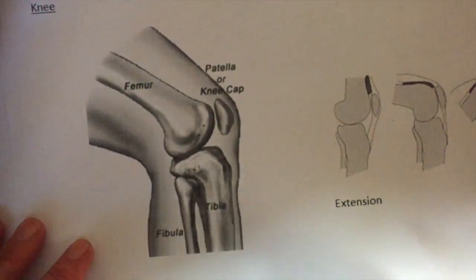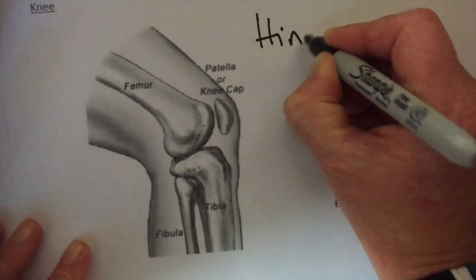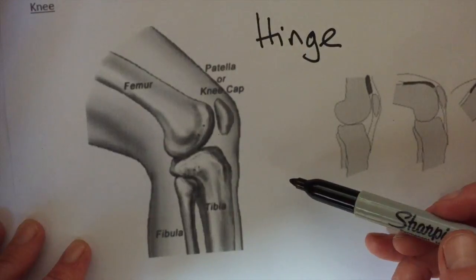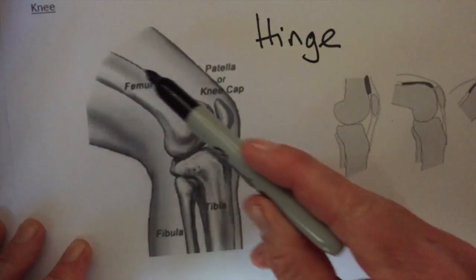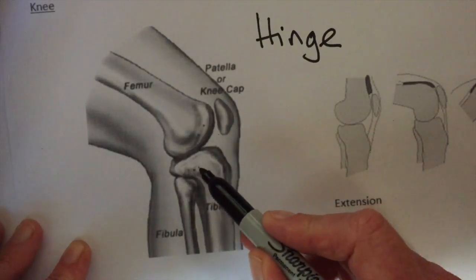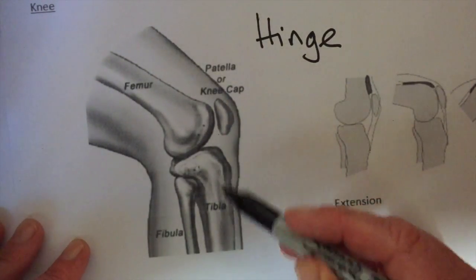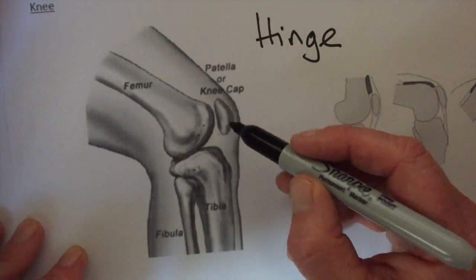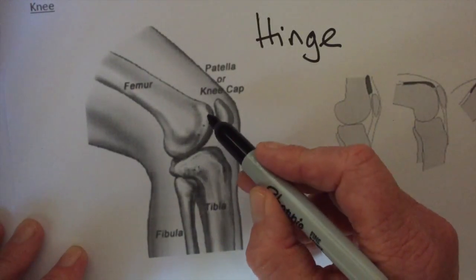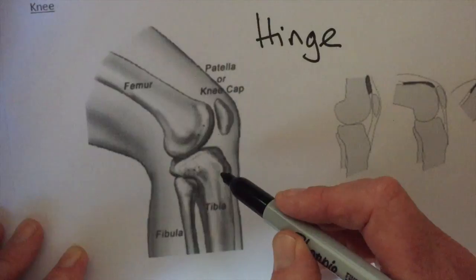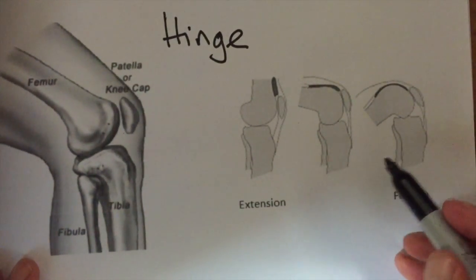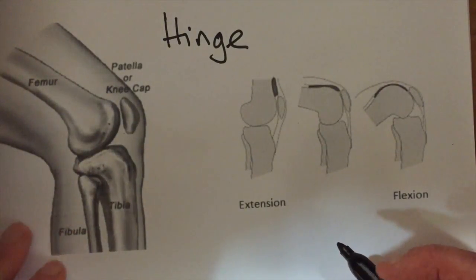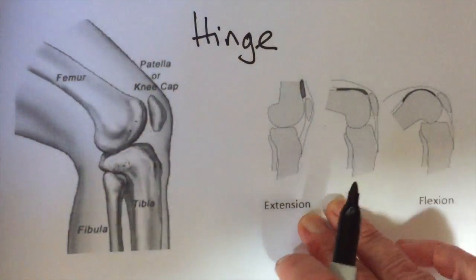The other type of joint you want to know about is called the hinge joint, and this example is the knee. You've got the biggest bone in the body, the femur, basically moving on top of the tibia. The fibula adds stability, and the knee cap moves within a groove. Effectively it's the femur and tibia that are moving. The movements it allows are basically back and forth, so that's flexion and extension.